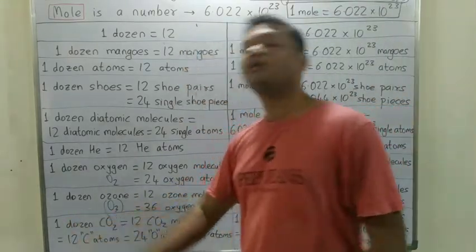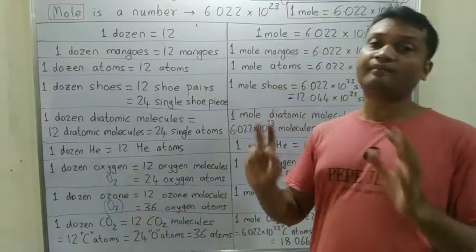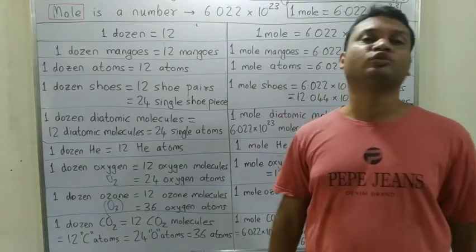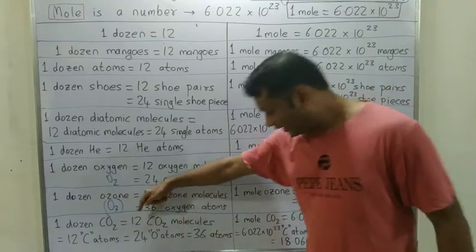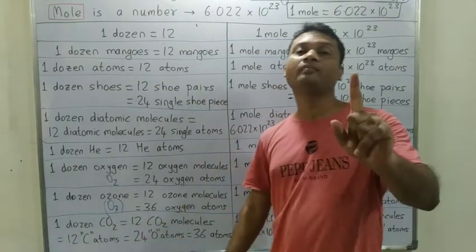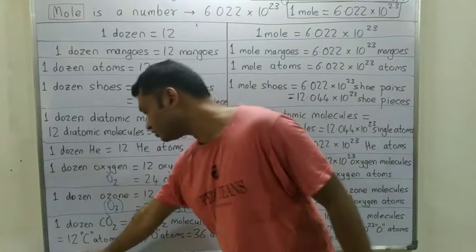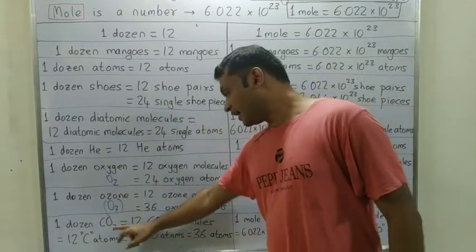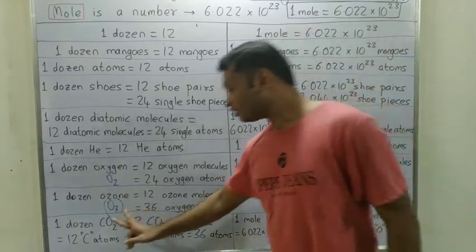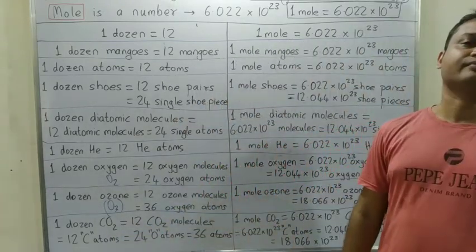The last case: one dozen carbon dioxide. One dozen CO2 = 12 carbon dioxide molecules. In each CO2 molecule there is 1 carbon atom and 2 oxygen atoms. So 12 carbon dioxide molecules have 12 carbon atoms. The oxygen atoms are 2 per molecule, so 12 into 2 = 24 oxygen atoms.